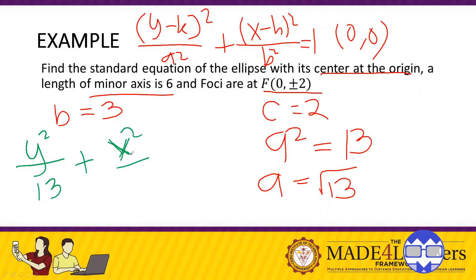Plus X minus 0 is X squared. All over, okay, all over, we have, B is 3, so 9. This is equal to 1. So this is the standard equation.